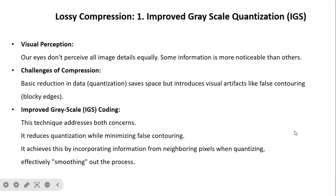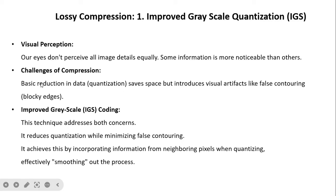Now we will discuss the first method: Improved Grayscale Quantization. The method takes advantage of visual perception because our eye does not perceive all image detail equally — some information is more noticeable than others. At the same time, we have to reduce false contouring. Basic reduction in data saves space but introduces visual artifacts like false contouring. The IGS coding scheme addresses both concerns: it reduces quantization while minimizing false contouring by incorporating information from neighboring pixels when quantizing, effectively smoothing out the process.